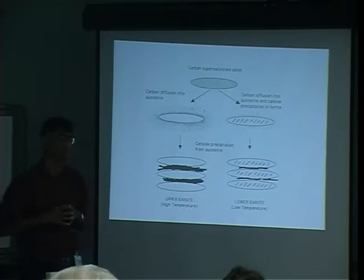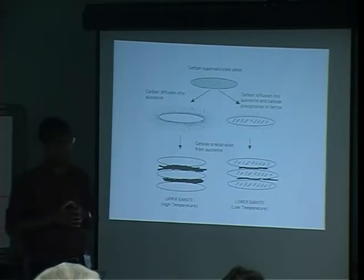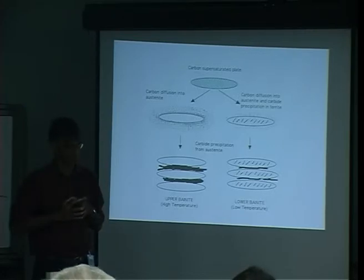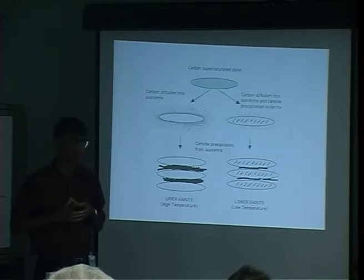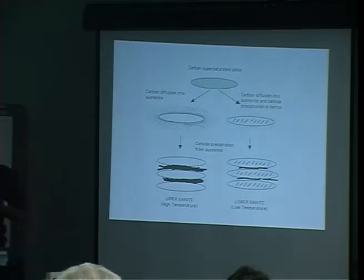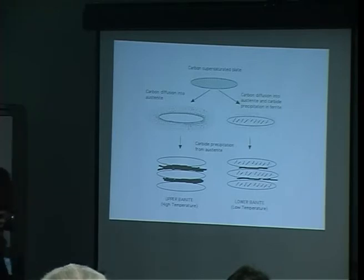What you observe in transmission electron micrographs of modern steels is that you won't find carbides inside the plates. What forms instead is ferrite with non-aligned carbides — the IIW term is FS (ferrite with non-aligned second phase). Sometimes people call it a bainite structure, though the terminology is loose.